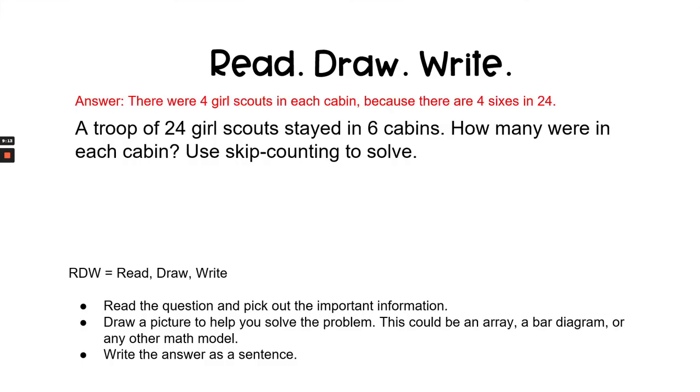Let's check our answer. Answer: There were four Girl Scouts in each cabin because there are four sixes in 24.